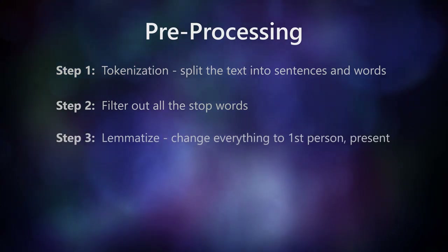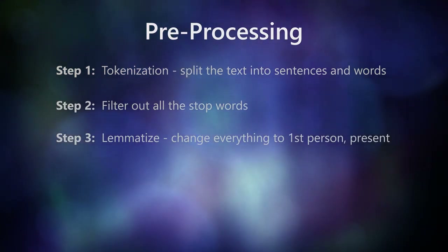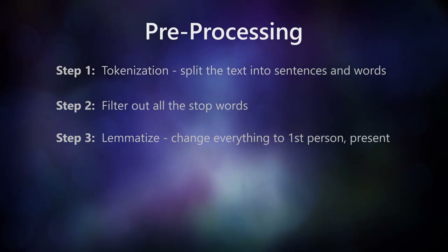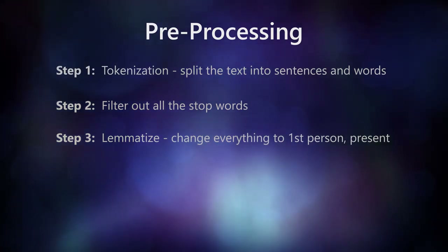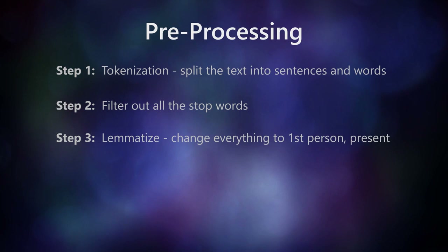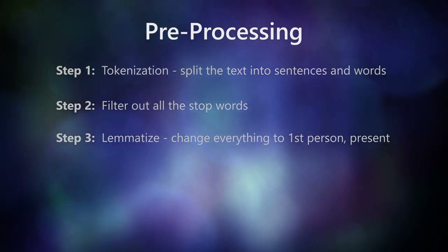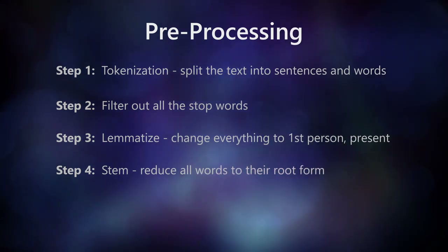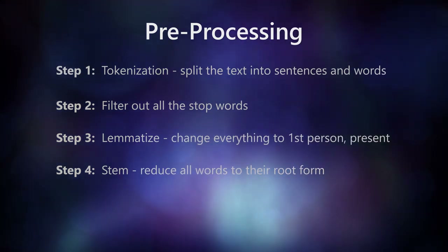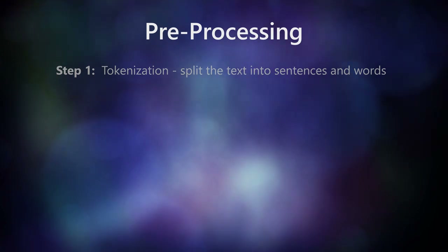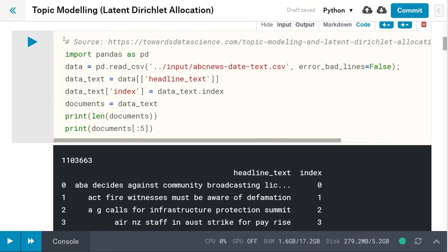Step three: the words are lemmatized. That means that third-person words are changed to first-person, and verbs in the past and future are changed to the present tense. For example, the sentence 'he walked to the park' would become 'I walk park.' Step four: finally the words are stemmed or reduced to their root form. For example, the word 'laziness' is reduced to just 'lazi' (L-A-Z-I). Alright, time to deep dive into the code.